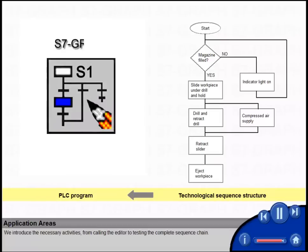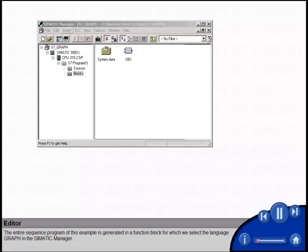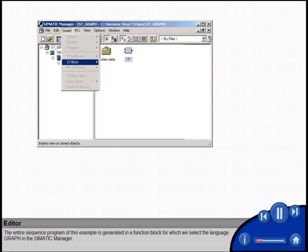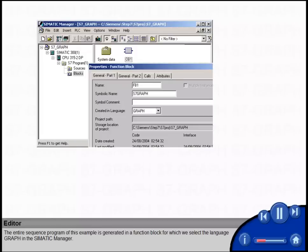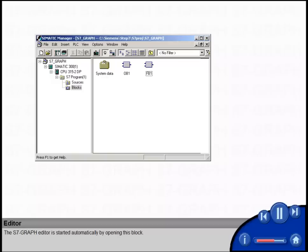We introduce the necessary activities from calling the editor to testing the complete sequence chain. The entire sequence program of this example is generated in a function block for which we select the language GRAPH in the Siemens manager. The S7-GRAPH editor is started automatically by opening this block.